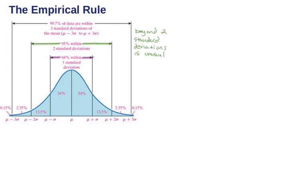The two standard deviation mark is important because we start talking about what's unusual. Once you go out about two standard deviations, you have about 95% of the data — so anything beyond that starts being an unusual case. And if you go out three standard deviations, you have about 99.7%. We usually don't really talk about beyond three standard deviations because the probabilities are so small.